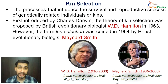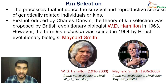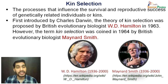Kin selection refers to the processes that influence the survival and reproductive success of genetically related individuals or kins. It was first introduced by Charles Darwin. The theory of kin selection was proposed by British evolutionary biologist W.T. Hamilton in the year 1963.